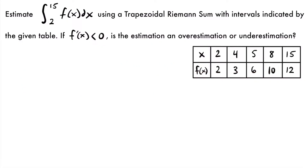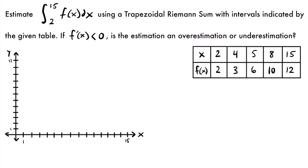To see how we calculate the area with unequal intervals, let's first draw a graph of our trapezoids using this table. Notice that from our table, the highest value of x is 15 and the highest output or y value is 12. So I have 15 as our largest x value and 12 as the largest y value. What we want to do is plot each of these coordinate points and connect them to make trapezoids.